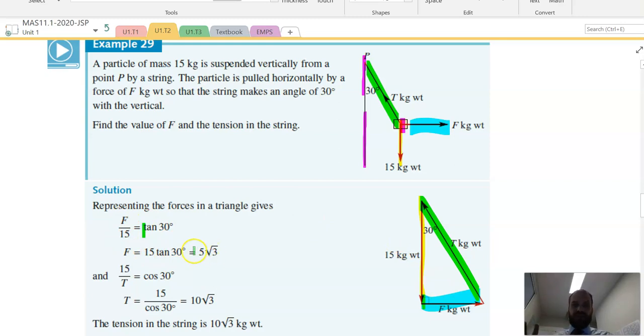And then the next bit is to find that one, which is just like a cos 30. Cos 30 equals adjacent over hypotenuse. And again, you should be able to do that without a calculator.